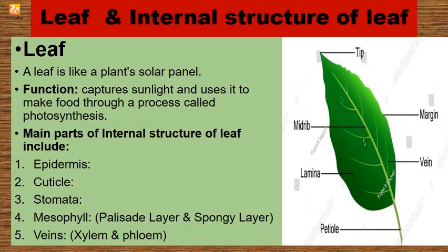Now at the end, I will explain about the leaf and its internal structure — transverse section (T/S). A leaf is like a plant's solar panel. Its function is to capture sunlight and use it to make food through a process called photosynthesis. Here is a figure showing the different parts of a leaf.